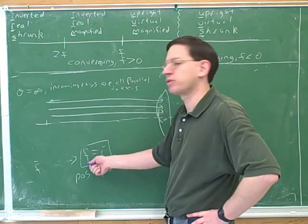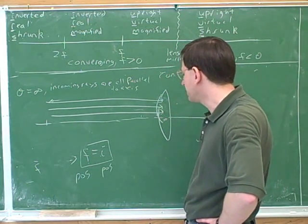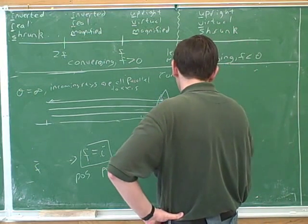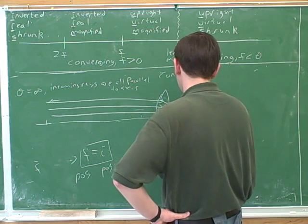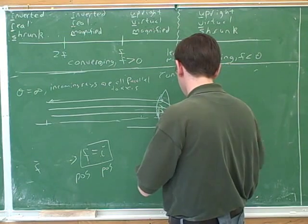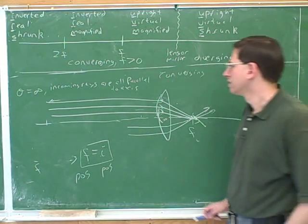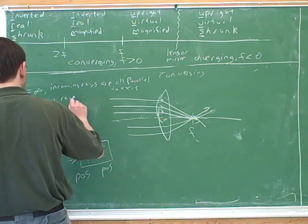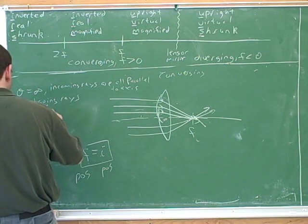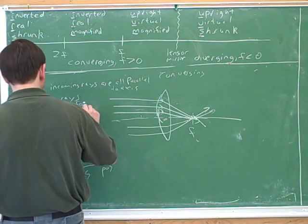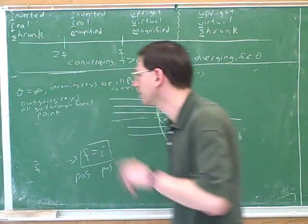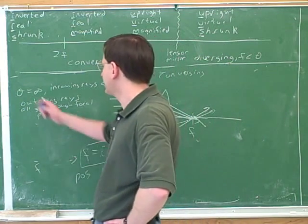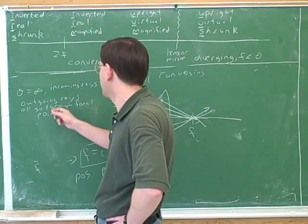Since the image is real and on the same side as the outgoing light, we use the far focal point. All the incoming parallel rays go out through that focal point — rays from above and below all converge to it. So when the object is at infinity, all outgoing rays pass through the focal point.